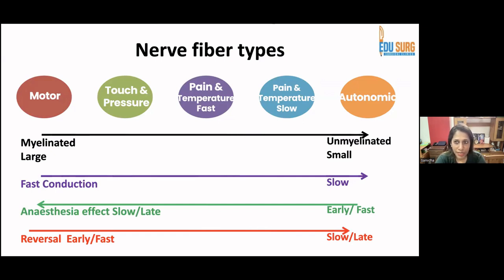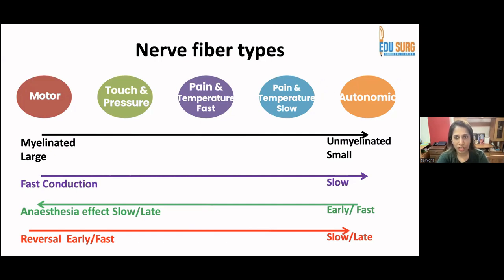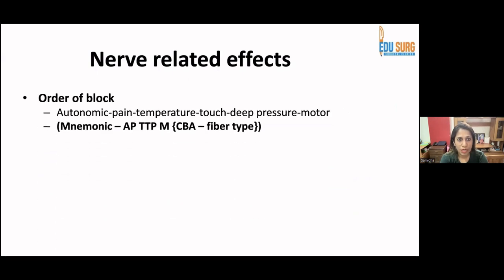Let's look at the nerve fiber types and their functions: motor, touch and pressure, pain and temperature fast fibers, pain and temperature slow fibers, and autonomic. Regarding blockade direction: from myelinated large to unmyelinated small, and from fast conduction to slow. The anesthetic effect goes from slow/late to early/fast, and reversal is from early/fast back to late.